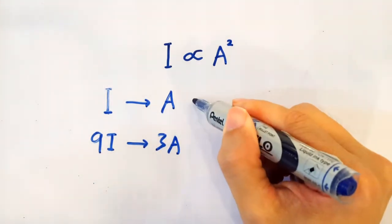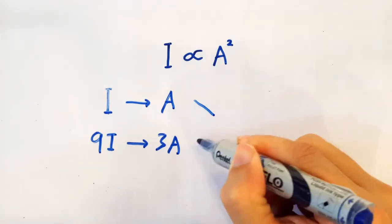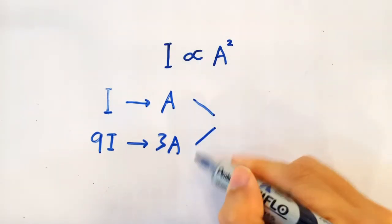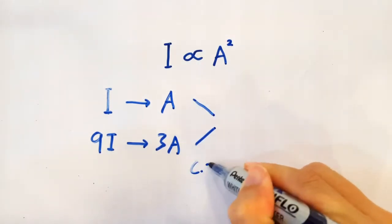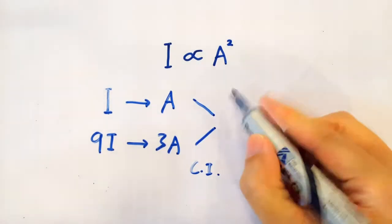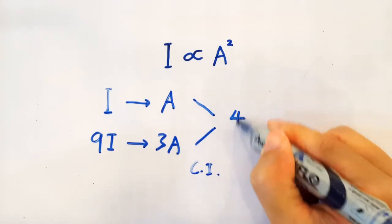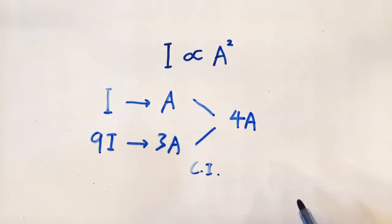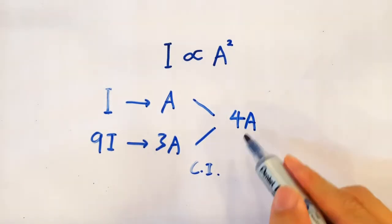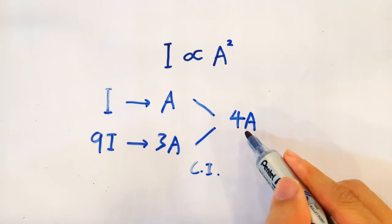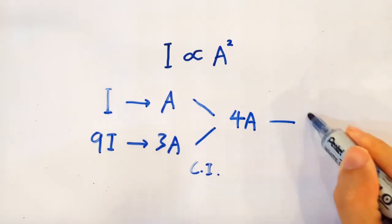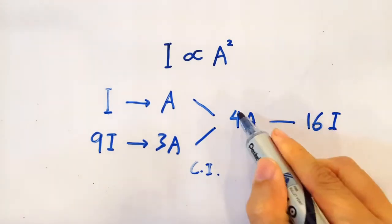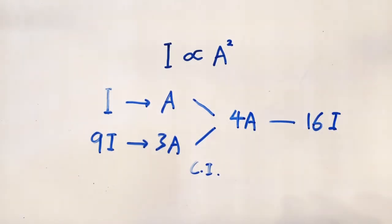So if these two waves superpose in phase, we get constructive interference and a resultant wave with amplitude 4a. A wave with amplitude 4a will have intensity 16i — 4 squared is 16.